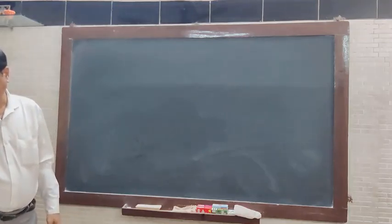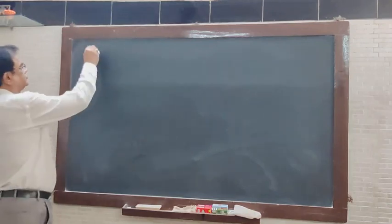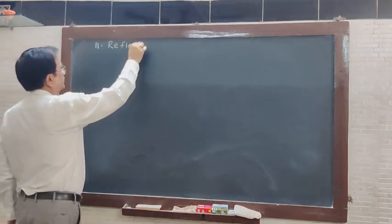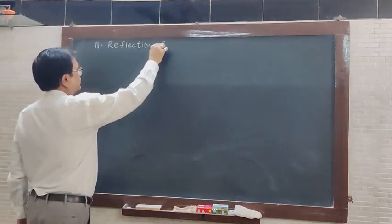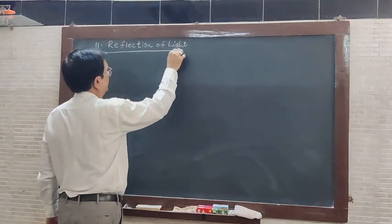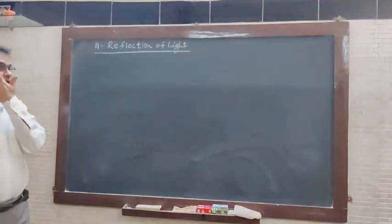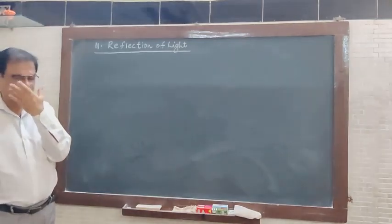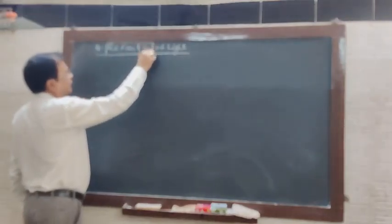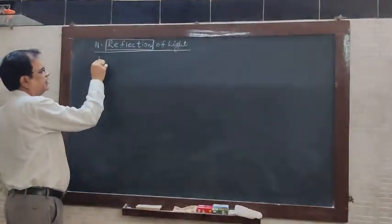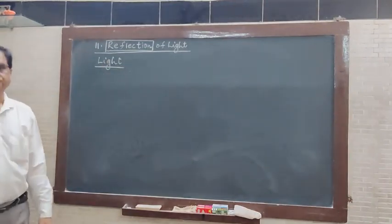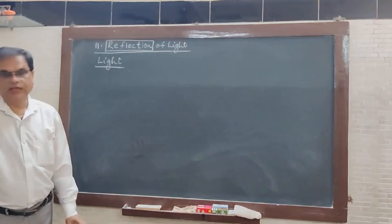We will start with chapter number 11, Reflection of Light. We have done this in each standard also. The most important thing for any object to reflect — what is necessary is light. Without light, you are not able to see any object.